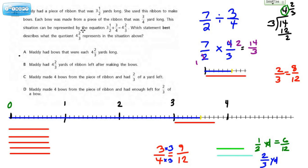This situation can be represented by the equation 3½, so we're taking this 3½, breaking it up into equal groups of ¾. Each bow would represent ¾ of a yard, equals 4⅔.